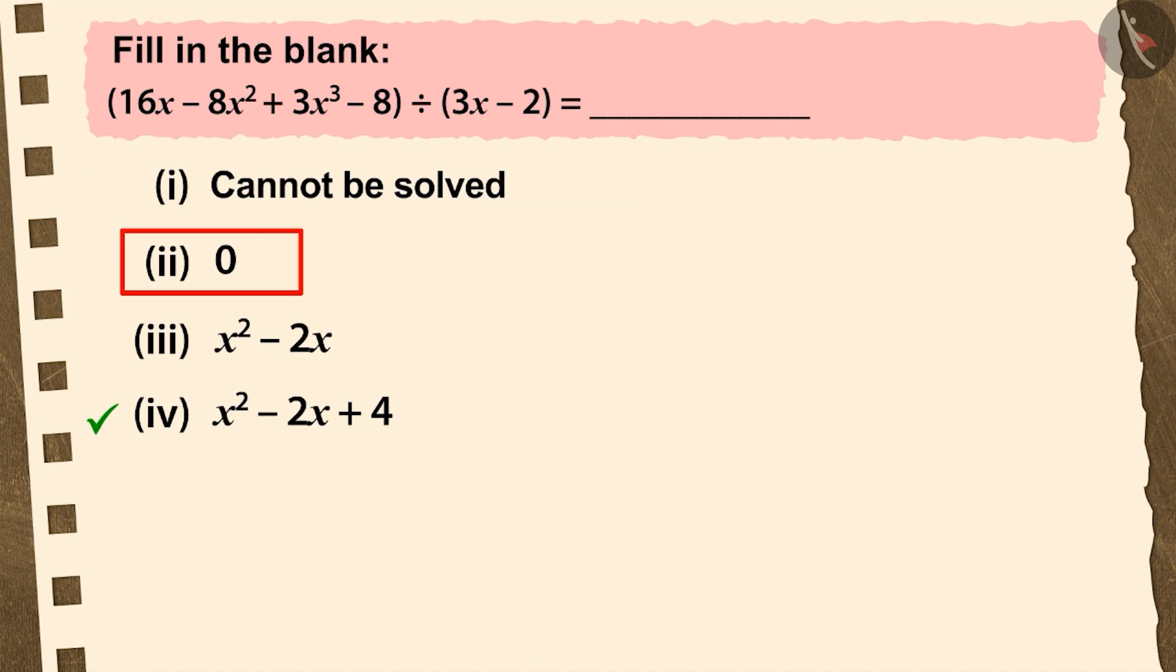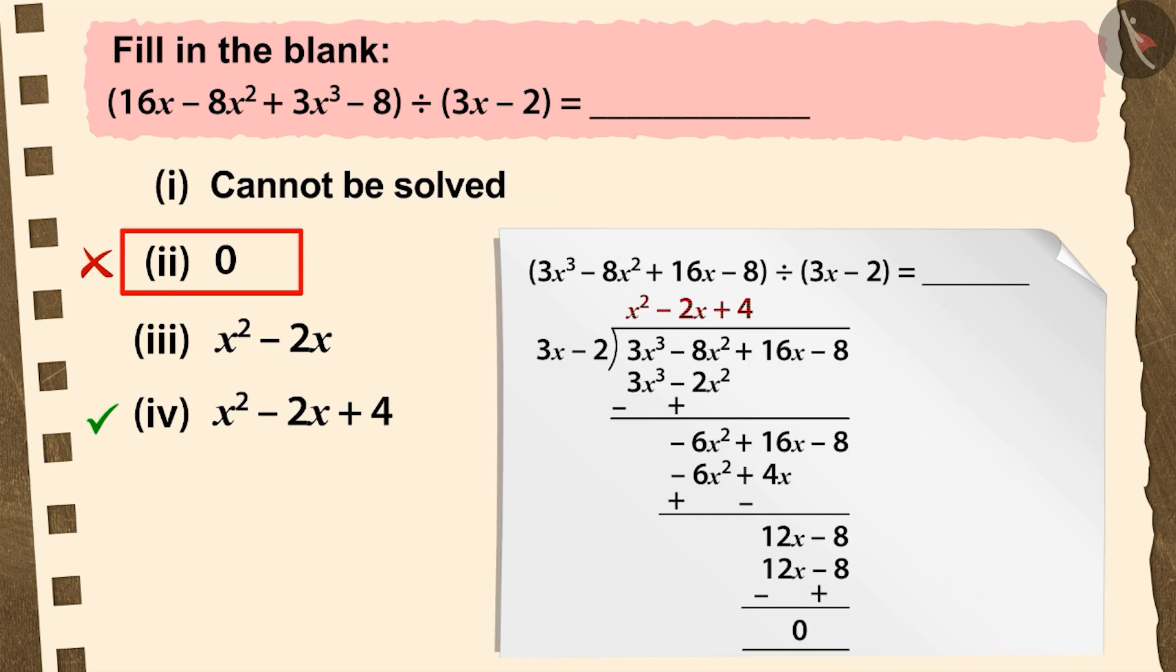If you have chosen the second option, it is a good try. But this is also an incorrect answer because in place of the quotient, you have chosen the remainder.